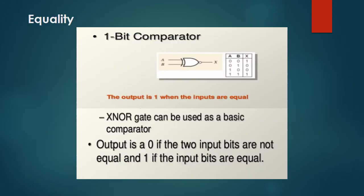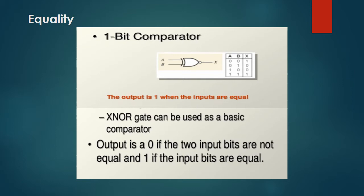A 1-bit comparator is constructed using an XNOR gate. XNOR gate can be used as a basic comparator. In the case of XNOR gate, its output is 0 if the two input bits are not equal and the output of an XNOR gate is 1 if the input bits are equal. This is the basic principle behind a 1-bit comparator. Next one is 2-bit comparator.